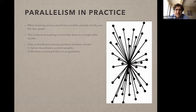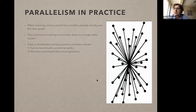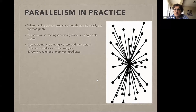In particular, can you use distributed optimization — something that many people, especially at LIDS, have been working on for decades, which was developed in the context of building sensor networks, distributing optimization using some kind of message passing — to actually speed up computation for machine learning tasks?